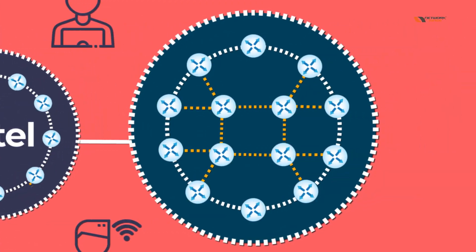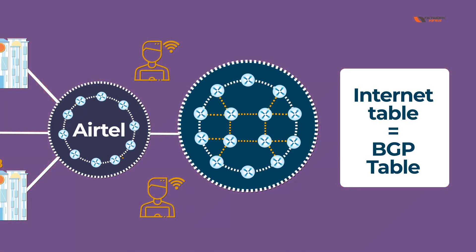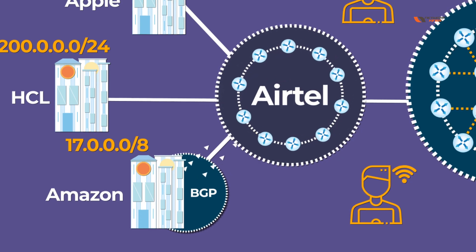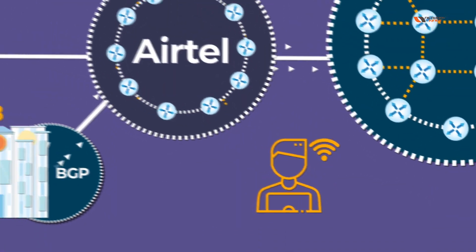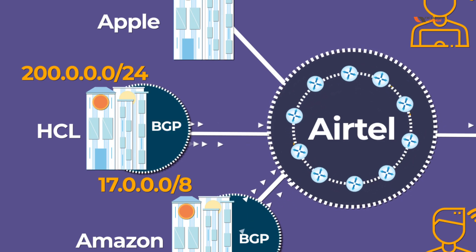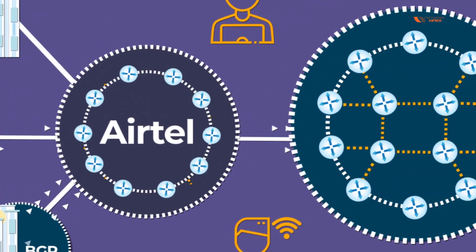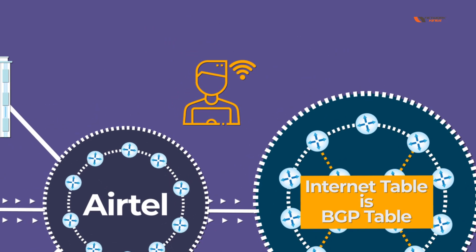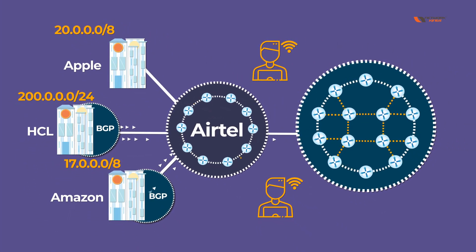All ISPs have big routing tables called BGP tables, also known as the internet table. BGP is the protocol that builds the internet table. Amazon runs BGP so that routes get forwarded across the internet and anyone can access amazon.com. Similarly, HCL has a public IP — they configure BGP and advertise it using the network command. All company networks go into the BGP table, which is the internet table, so everyone knows where Amazon, HCL, and Apple are, and we are all connected because of BGP.